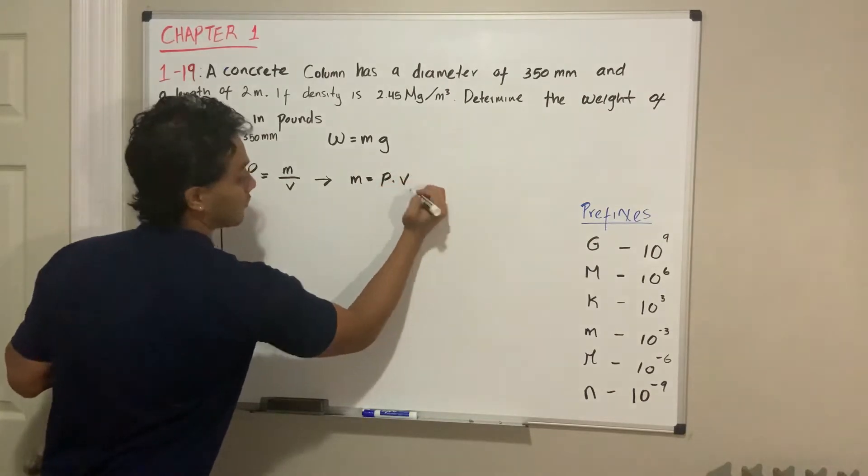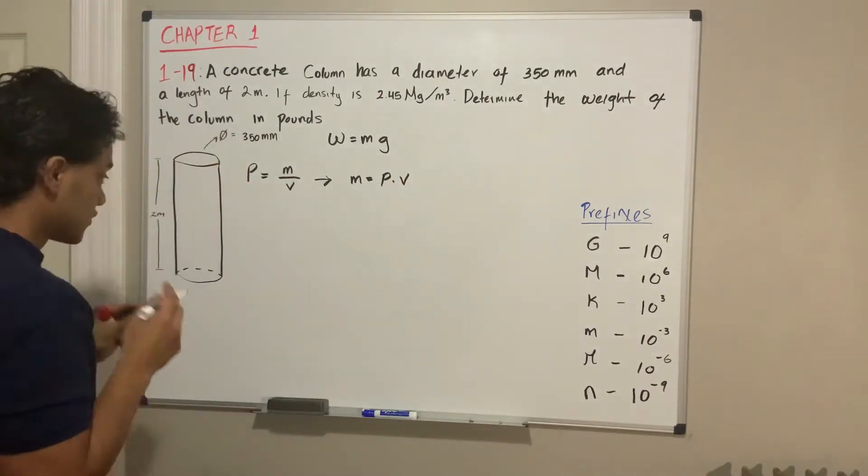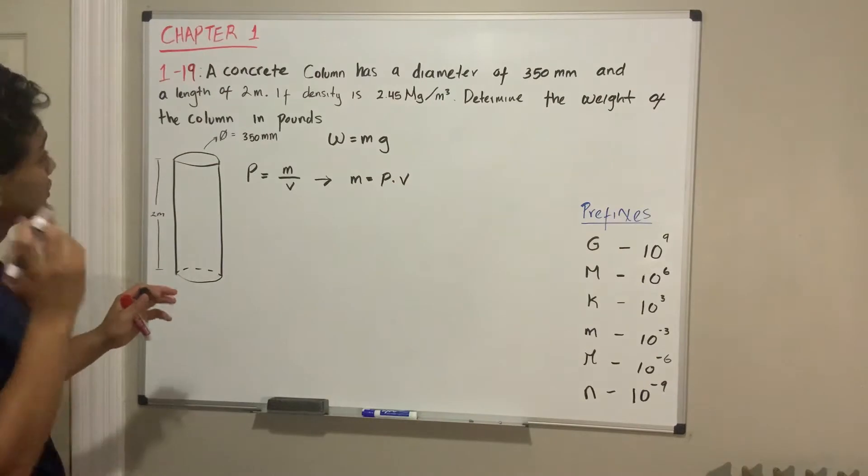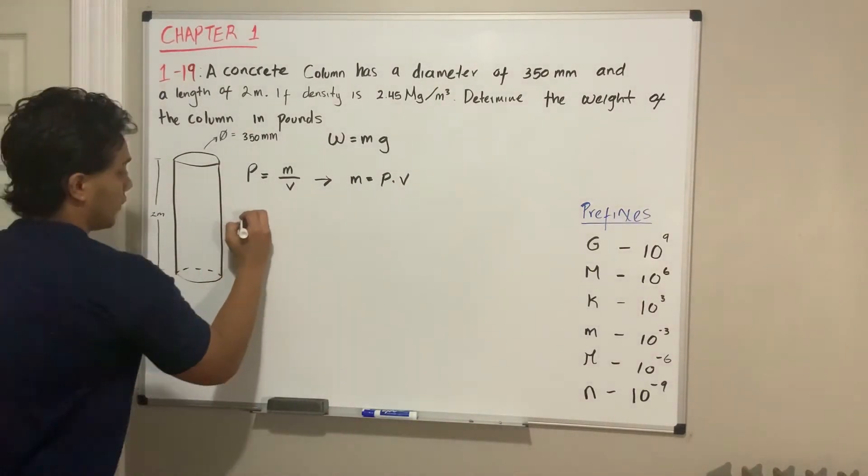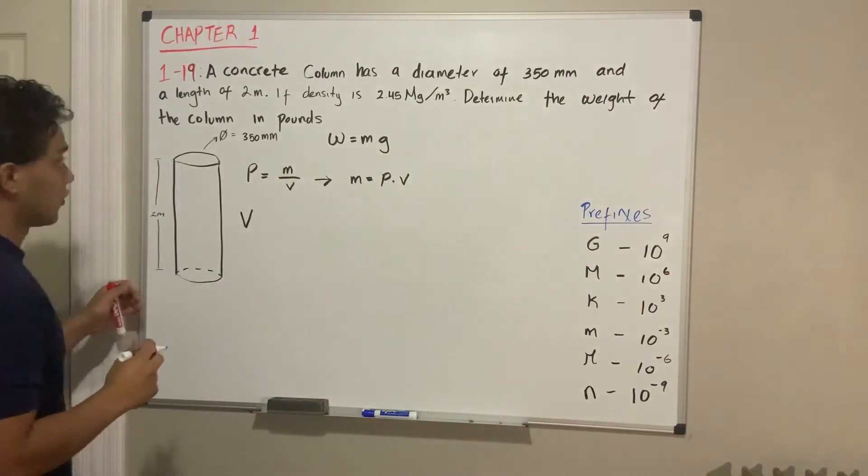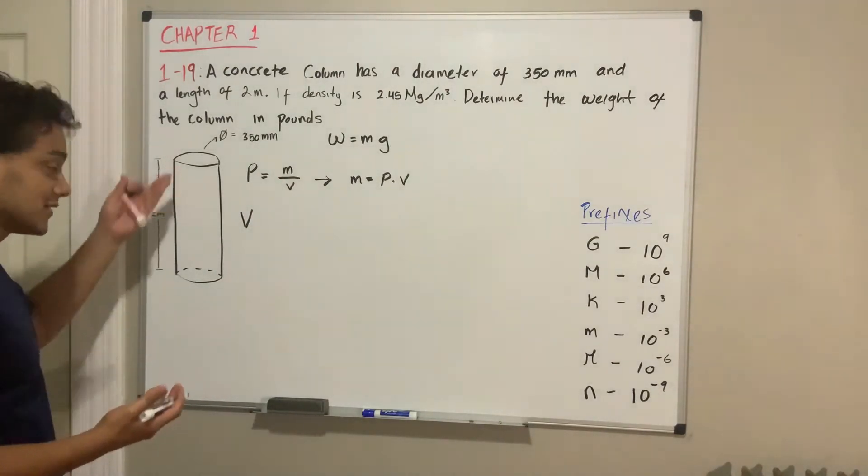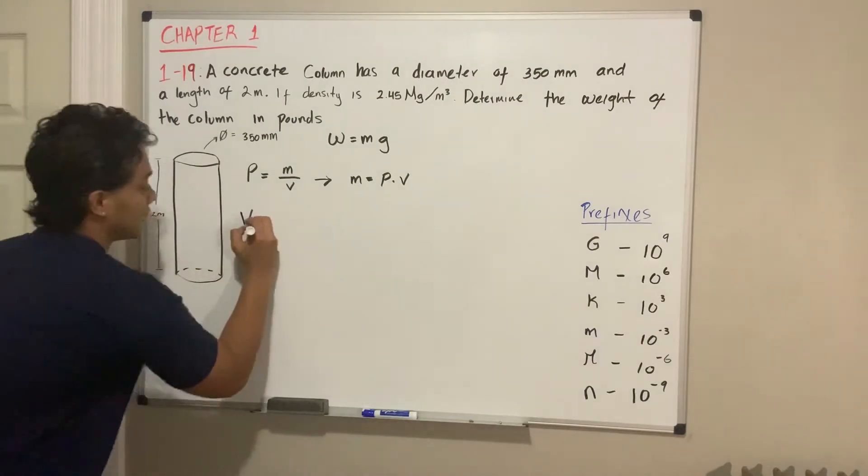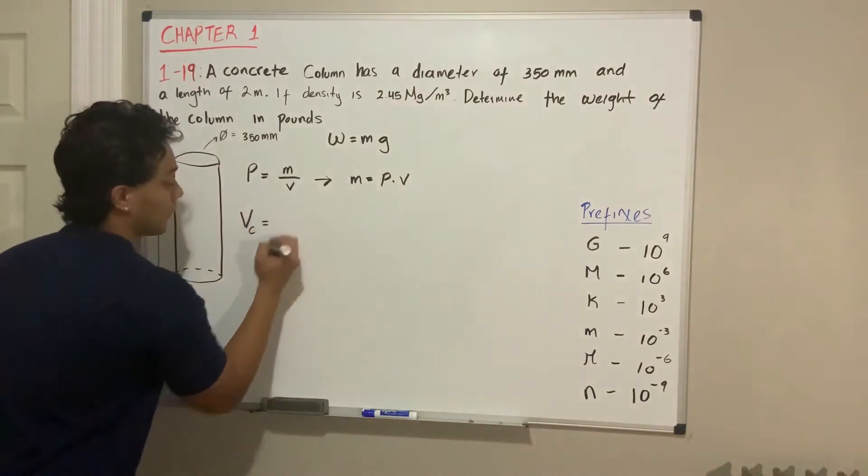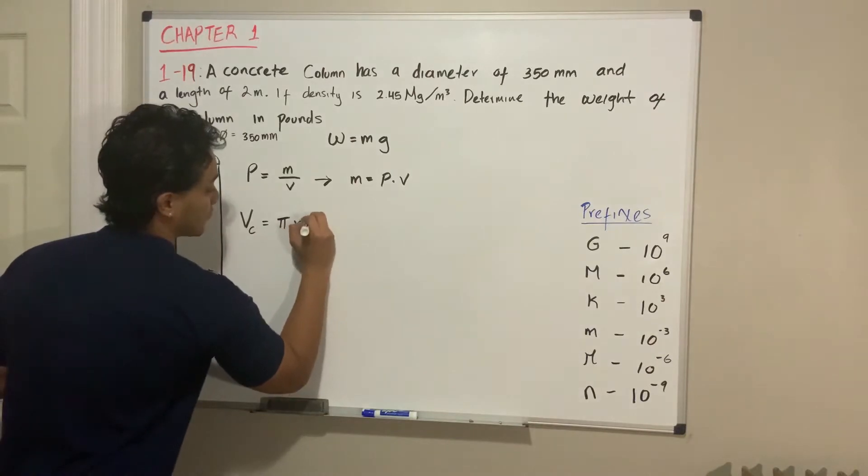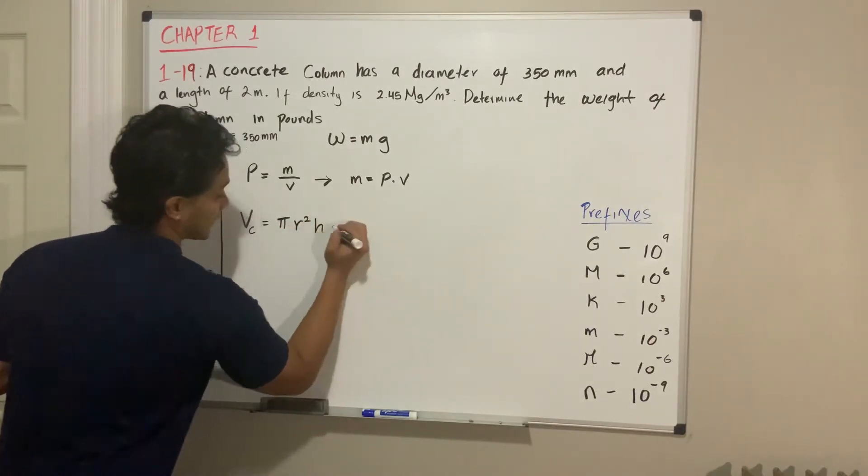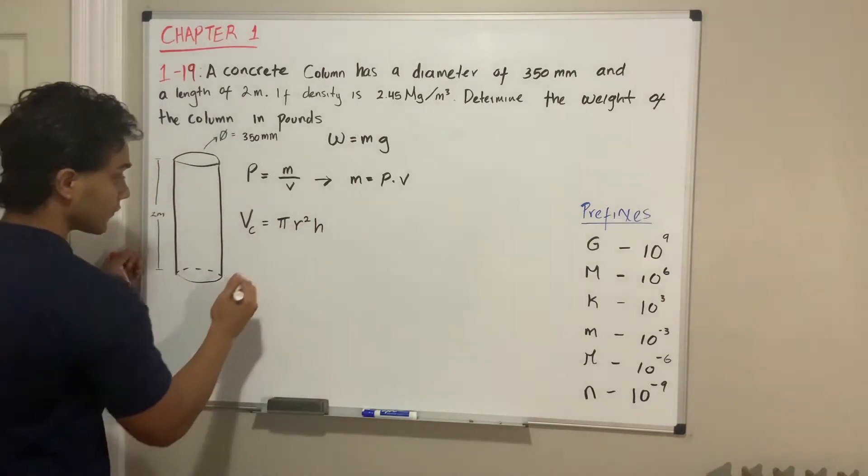So we need to find the volume of this concrete column. In this case, this is a cylinder, so we will find the volume of a cylinder. The volume of a cylinder is pi multiplied by r squared, also multiplied by its height.